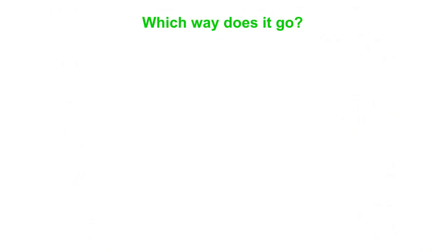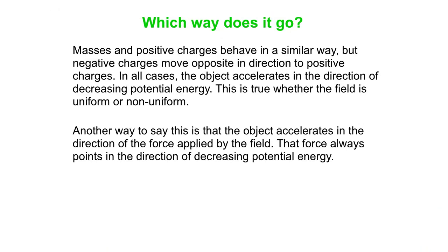So the best answer to which way it goes is whether it's a mass, an object with mass, or an object with a charge, then in all cases, the object accelerates in the direction of decreasing potential energy. And that's true whether the field is uniform or non-uniform, in fact. So in many cases it goes with the field, but not every case, such as the negative charge case, but it always goes in the direction of decreasing potential energy.